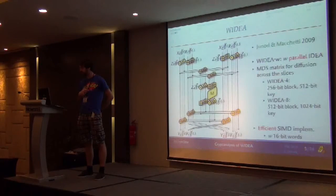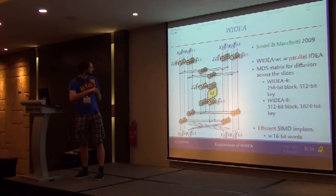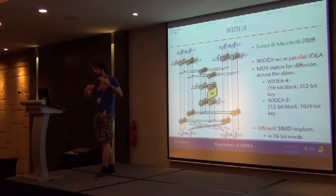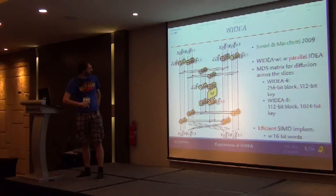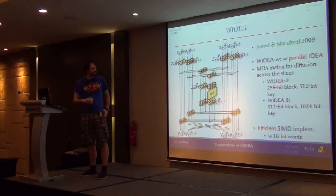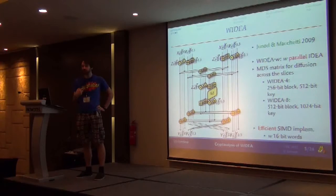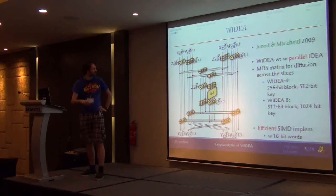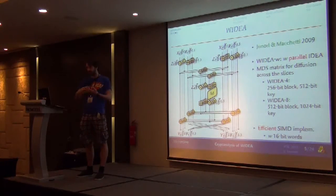So what does W-IDEA look like? You have several copies of IDEA in parallel — W copies. You make them interact via an MDS matrix, which is used to diffuse values from one IDEA instance to the others. There are mostly two designs: WIDEA-4 and WIDEA-8, which are 256-bit and 512-bit block ciphers respectively. Implementation is quite efficient because you can use vector instructions like SSE, doing all the IDEA instances at the same time, so it's very fast.